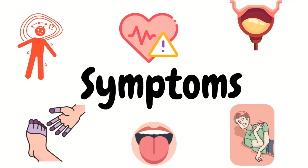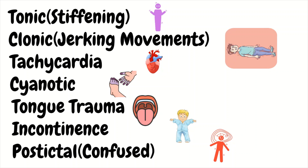Now let's briefly go over signs and symptoms. We have stiffening and jerking-like movements that we are well aware of. You will also see tachycardia, which is easy to see when the patient is on the monitor. You can also see cyanosis, because the diaphragm will also be affected, so ventilation and oxygenation may not be adequate. Then you have tongue trauma, as the patient can accidentally bite their tongue while seizing, and incontinence, as patients will sometimes urinate on themselves. Last but not least, the patient can be post-ictal — meaning post-seizure, the patient is confused and can take time before returning to their normal mentation.